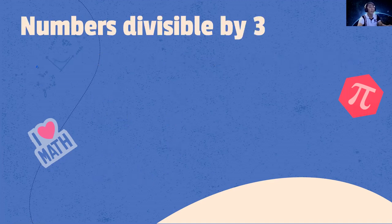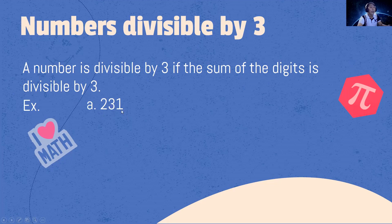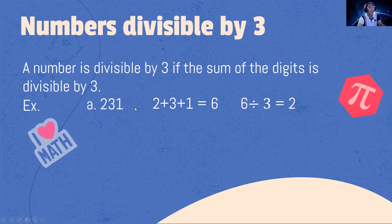Let's proceed to numbers divisible by 3. A number is divisible by 3 if the sum of the digits is divisible by 3. Example: 231 — 2 plus 3 plus 1 is 6, and 6 divided by 3 is 2. Therefore, 231 is divisible by 3 because the sum of the digits is divisible by 3.